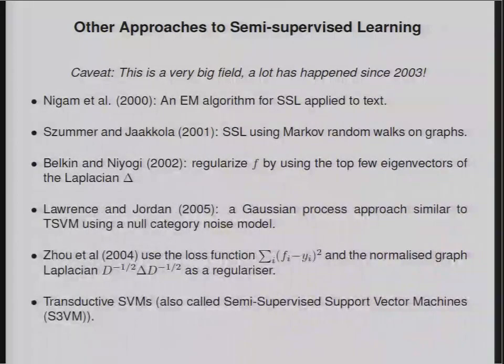Neil Lawrence and Mike Jordan have an approach to semi-supervised learning based on Gaussian processes, which is very similar to something I'm about to describe, which is a transductive SVM. It has basically a Gaussian process model with three classes: 0, 1, and in between. What they're trying to do is to avoid labeling points in between, and what that does is it separates out the classes from each other in an interesting way.